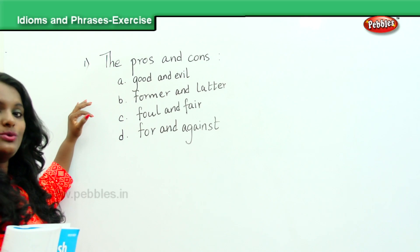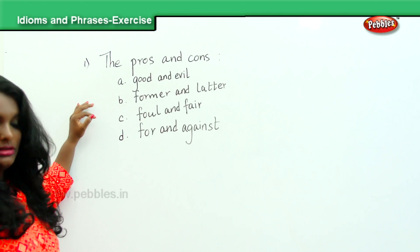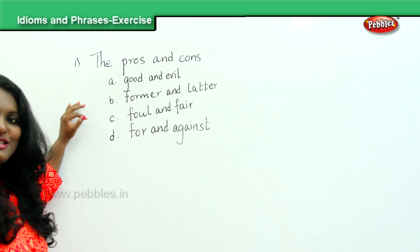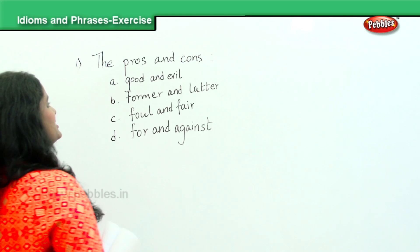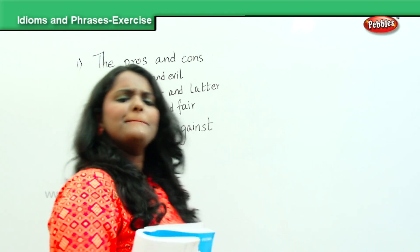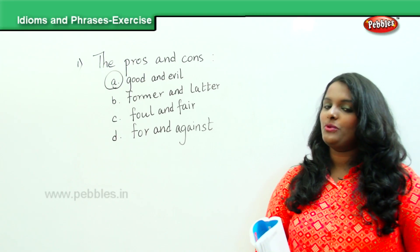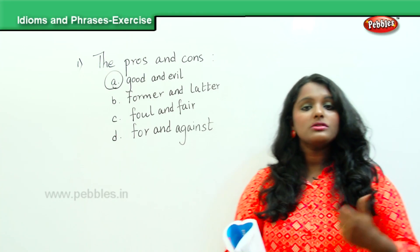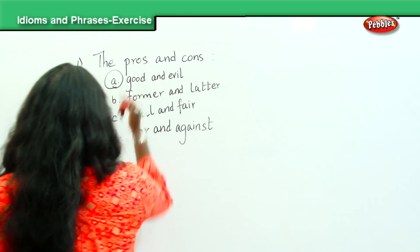Any guesses what the answer would be for 'pros and cons'? This is a question asked for a probationary officer in bank examinations. The answer for pros and cons is 'good and evil.' You would have heard this term — social media or cell phone, the pros and cons — meaning what are the good and the bad of using a cell phone.